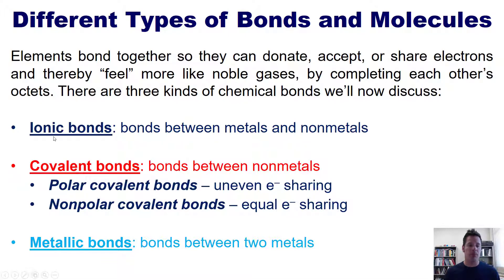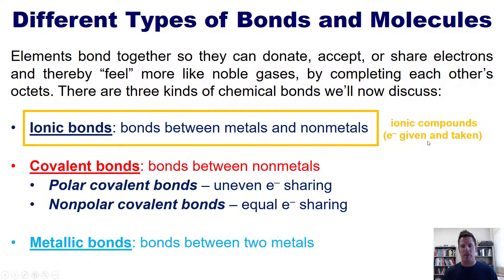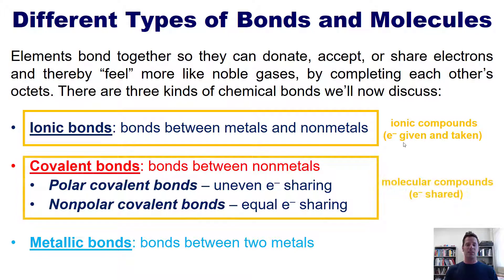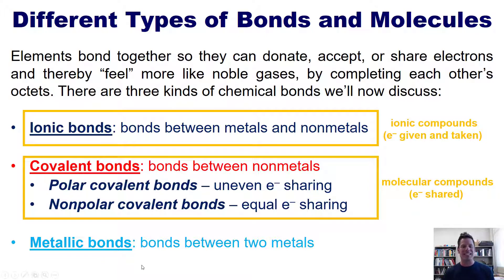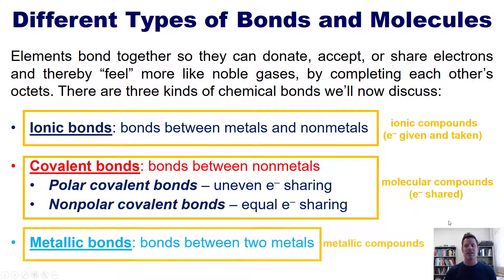Compounds that have ionic bonds are called ionic compounds — these are compounds in which electrons are being given and taken by one element or another. Compounds that have covalent bonds are called molecular compounds, not covalent compounds. Compounds that have metallic bonds are called metallic compounds, which we will discuss in a later chapter. Let's now take a closer look at each of these subtypes, beginning with ionic bonds.